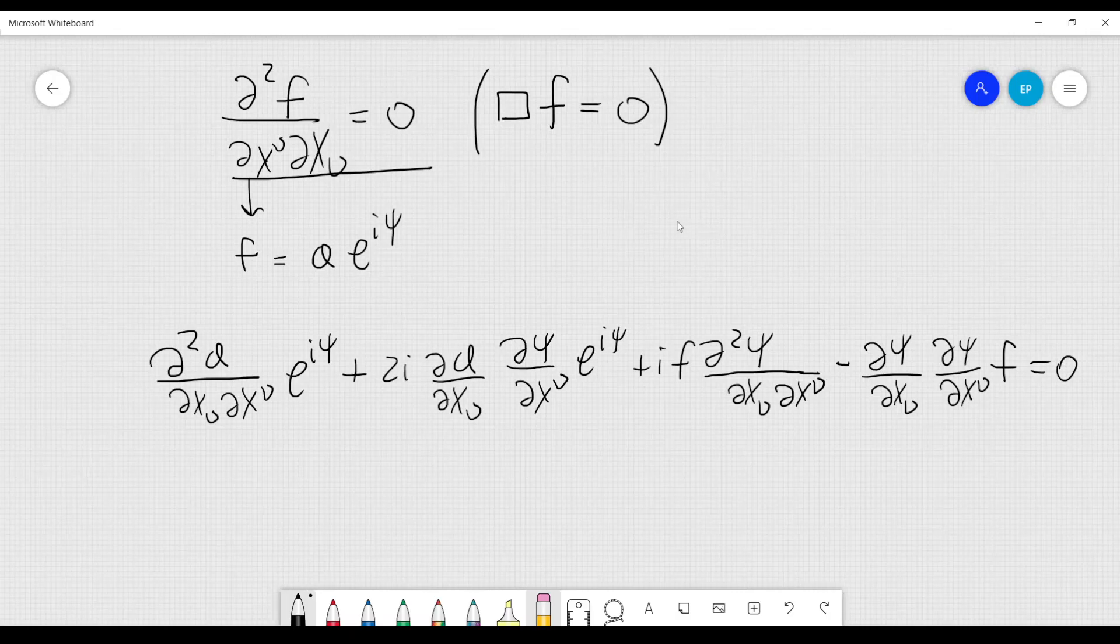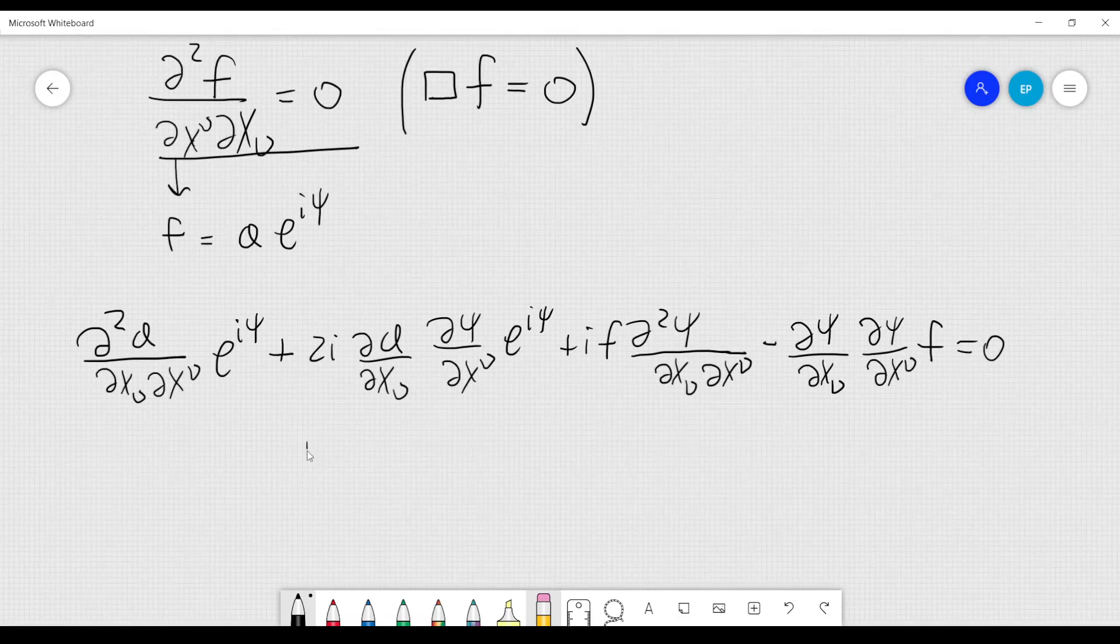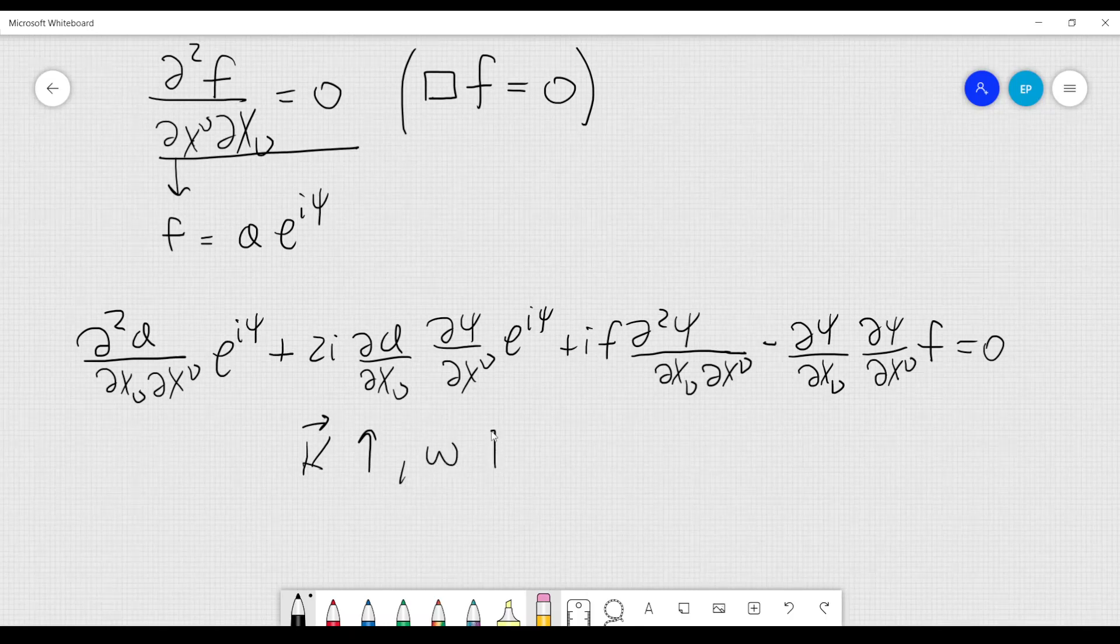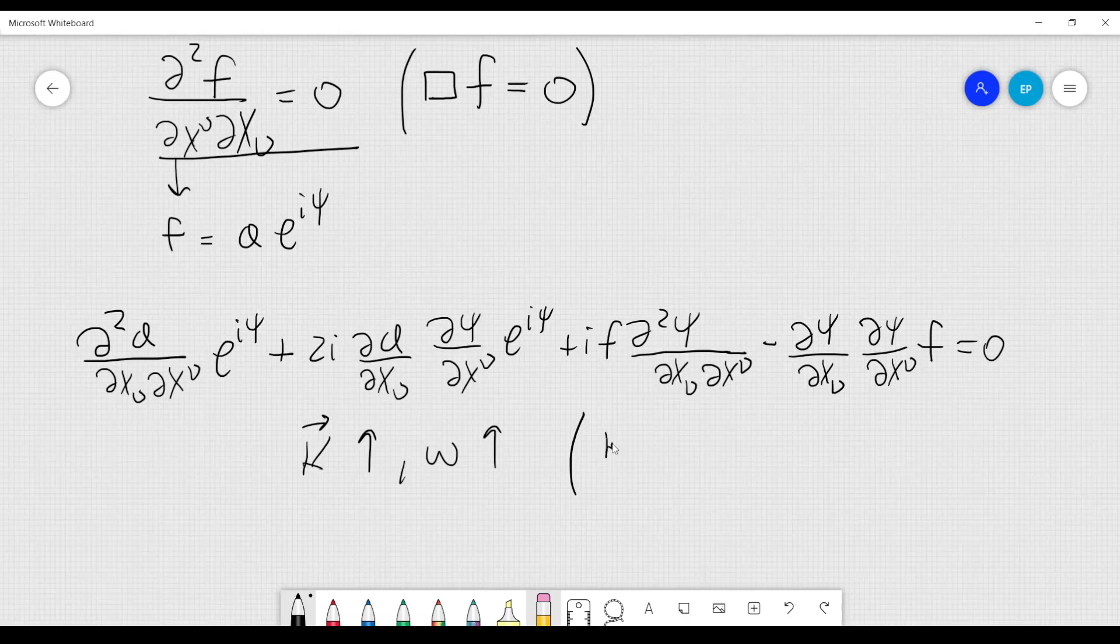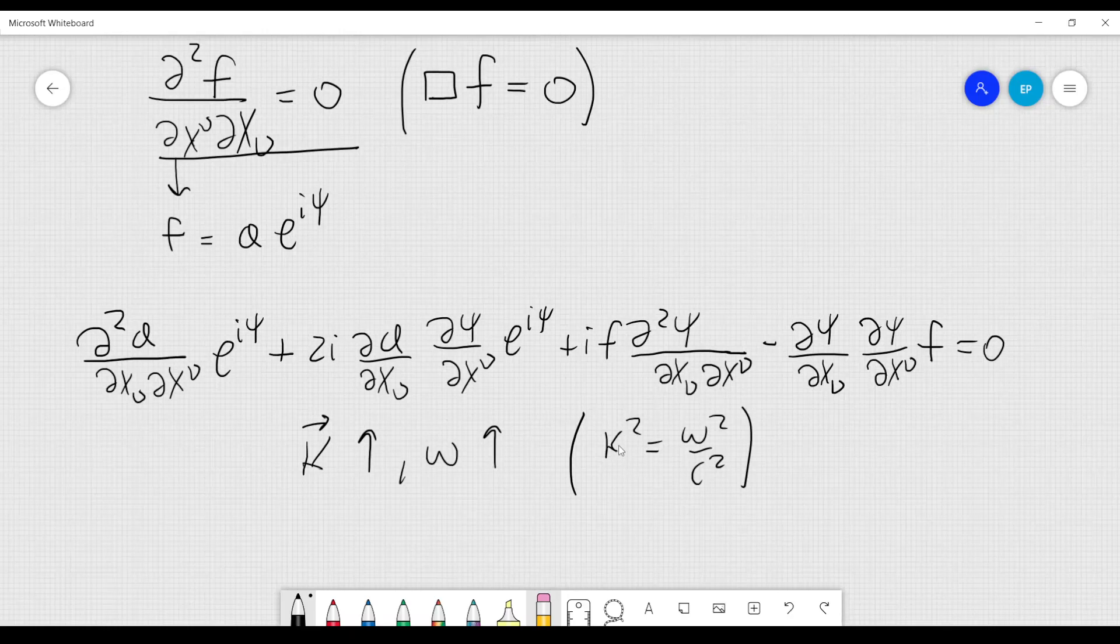And now, in geometrical optics, we know that k is a very large quantity in magnitude, and also the frequency is a very large number. This is a consequence also of the equation k squared equal to omega squared over c squared. So, if the vector k is large, also omega should be large.